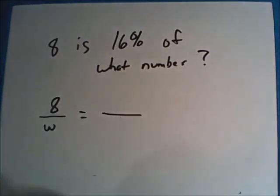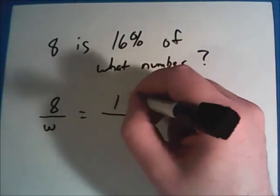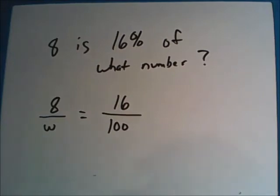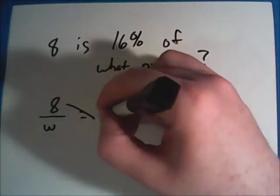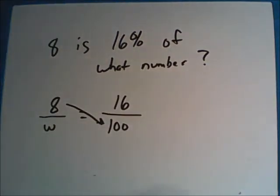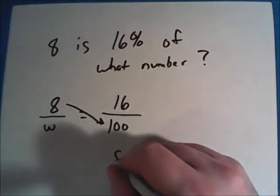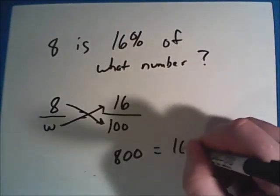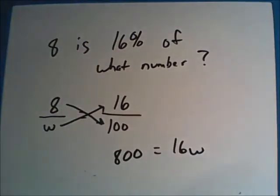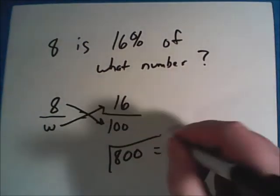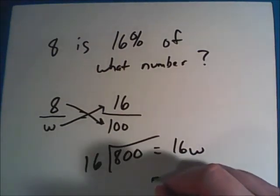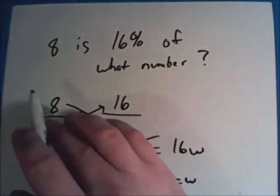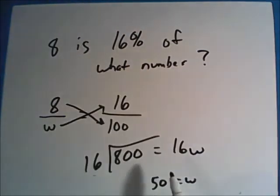Now the percentage side is pretty easy to fill out. Because 16 is the part we're looking at. And the whole percentage is of course 100. Now you just cross multiply. So you do the top left and multiply it times the bottom right. So 8 times 100 gives us 800. Then you do W times 16. Which gives us 16W. Here we can just do 800 divided by 16. And that should get us to 50. So that W is 50. Or the whole amount is 50. So 8 is 16% of 50.